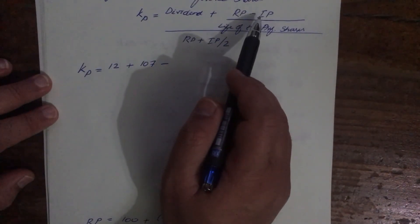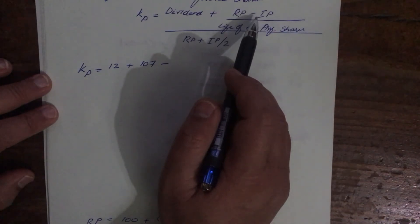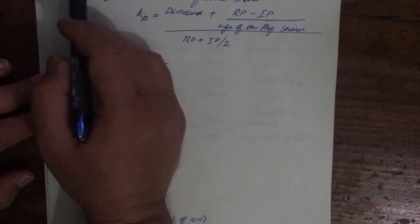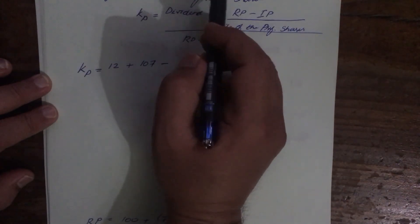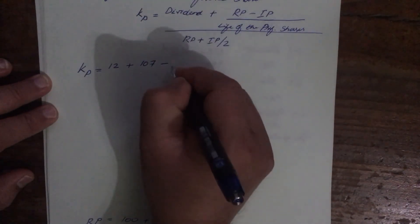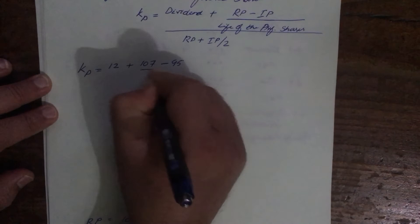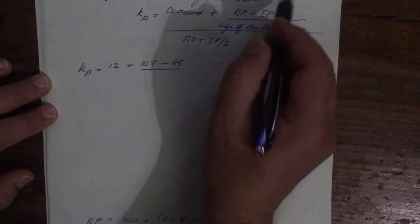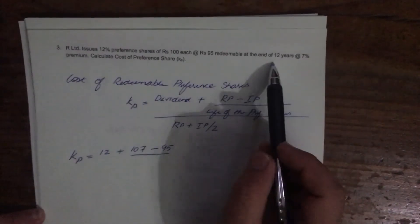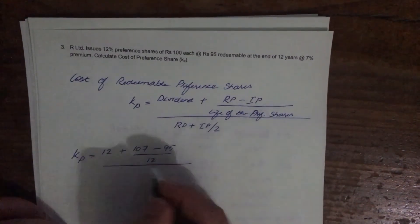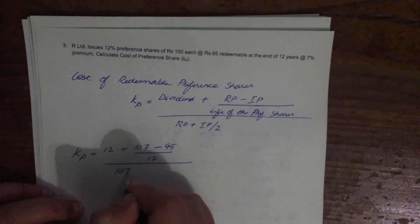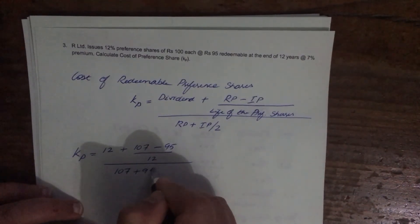Now what is the net issue price? Our Limited issues shares at 95, so the net issue price is 95. The life of the preference shares — redeemable at the end of 12 years — so that's 12. We've already found RP as 107, so (107 plus 95) divided by 2.